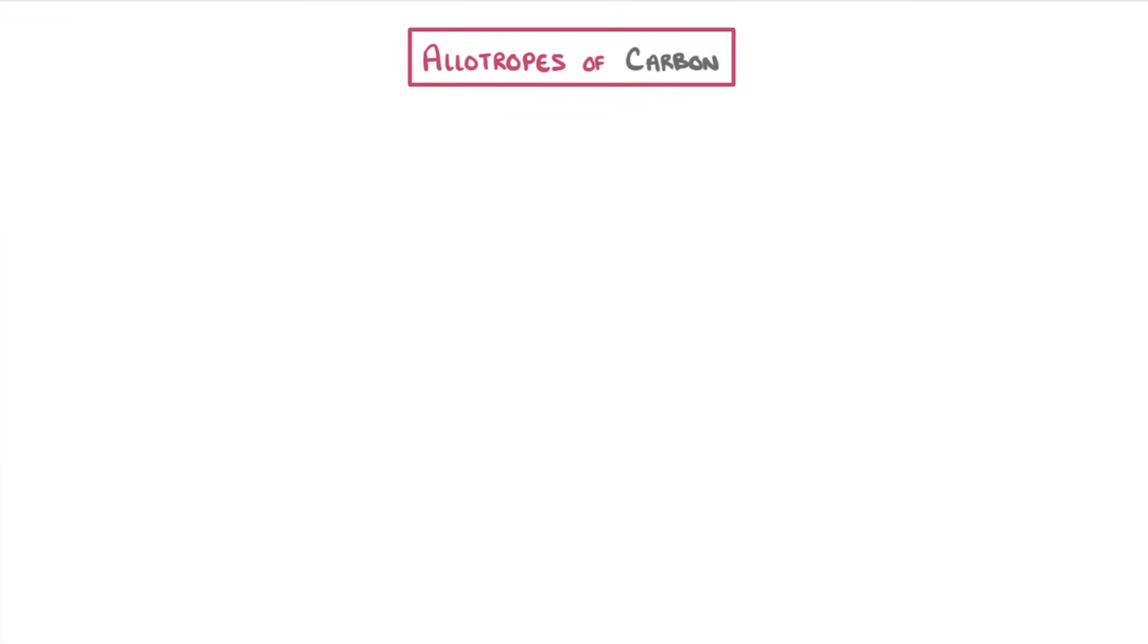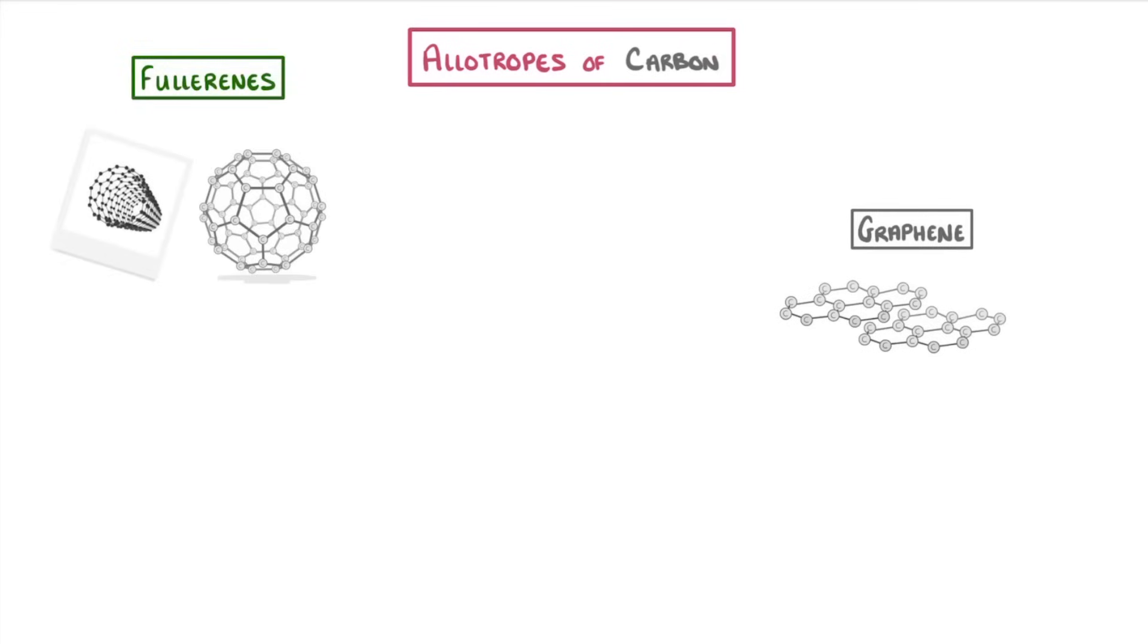In today's video, we're going to look at the allotropes of carbon, known as graphene and fullerenes, but we'll spend most of the video looking at the many uses that they have.